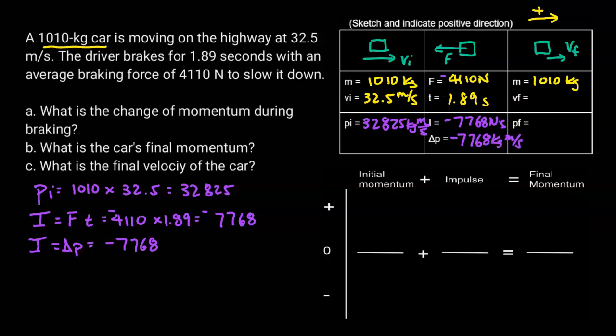To find the final momentum, I know that P final minus P initial equals delta P. So the final momentum is going to be the initial plus the change in momentum.